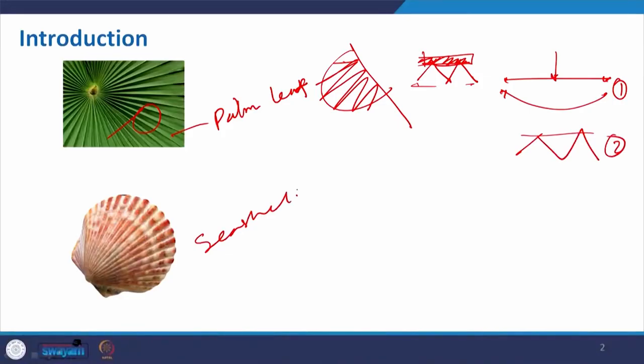Similarly, there is also the C shell structure. In this case the particular structure makes it stiffer and very strong, acting as protection for the creature in nature. We can get inspired from that and develop something.